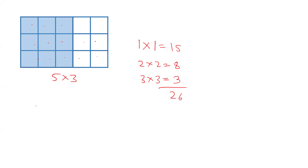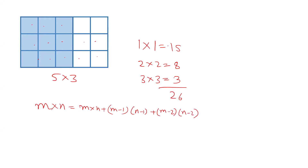Is there any formula for this? If I take this as m × n, then the number of squares will be m×n + (m−1)×(n−1) + (m−2)×(n−2), and so on until one of the terms reaches 0. For example: 15 = 5×3, 8 = 4×2, 3 = 3×1. But the next would be 2×0 = 0, so we stop. This is the formula.